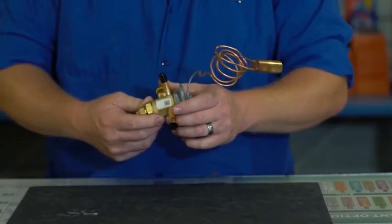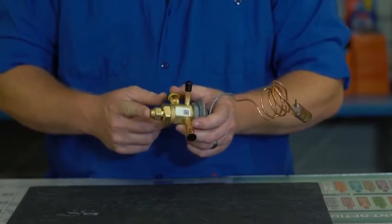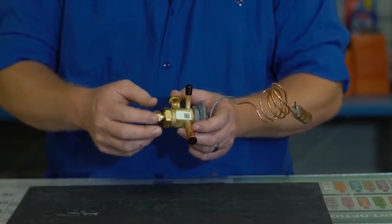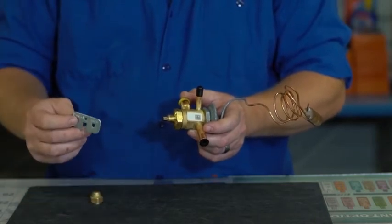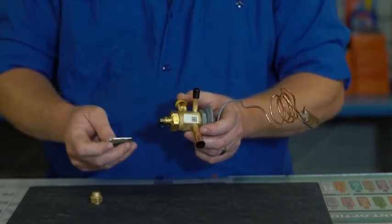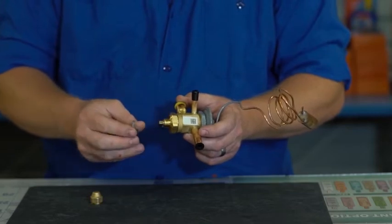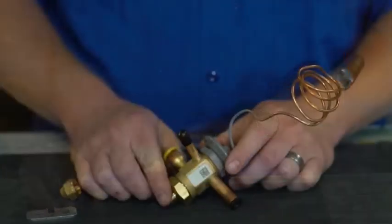If you look at the TEV, if it has a removable bottom cap with a stem, it will be adjustable. You can use your Sporlan tool to adjust your superheat by turning the stem clockwise or counterclockwise.